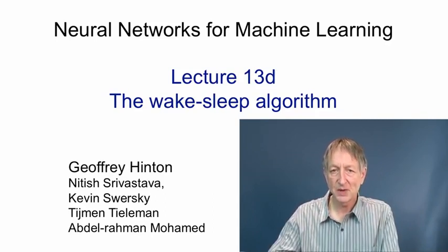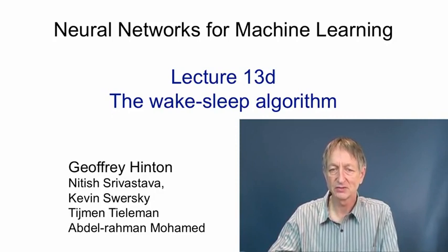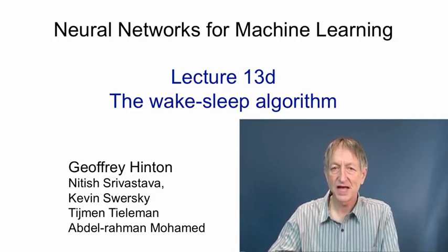The ideas behind the wake-sleep algorithm led to a whole new area of machine learning, called variational learning, which didn't take off until the late 1990s, despite early examples like the wake-sleep algorithm, and is now one of the main ways of learning complicated graphical models in machine learning.